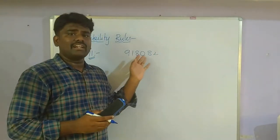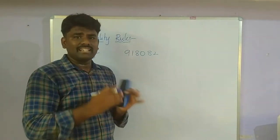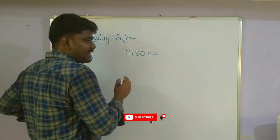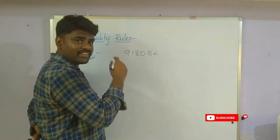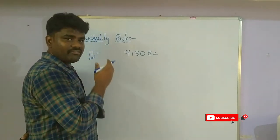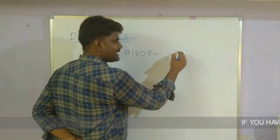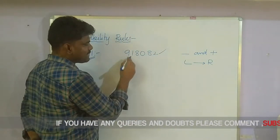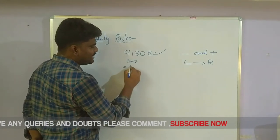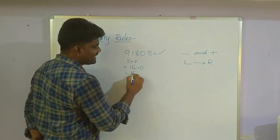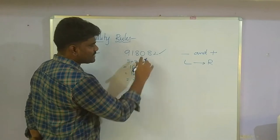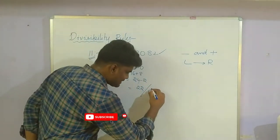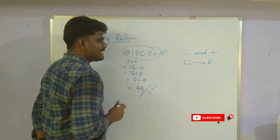The 11 divisibility rule means: take the sum of alternative digits, then do the subtraction, and check if the result is divisible by 11. We can also do this in a different manner — take the difference and sum from left to right. That means 9 minus 1 is 8, plus 8 is 16, minus 0 is 16, plus 8 is 24, minus 2 is 22. Is 22 divisible by 11? Yes, so the number is divisible by 11.